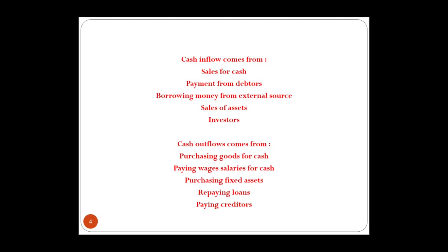When talking about cash flow, there are two things: cash inflow and cash outflow. Cash inflow is the money coming into the business. Sources include selling goods for cash, debtors paying, borrowing from the bank, selling assets, and investors investing. Sometimes we sell goods on credit — we sell now and receive money later. Customers who owe money for goods bought on credit are called debtors or trade receivables, which is the term you will see in the exam.